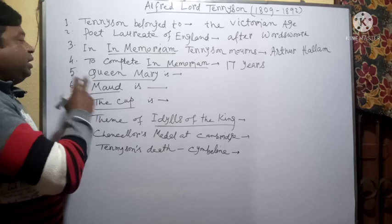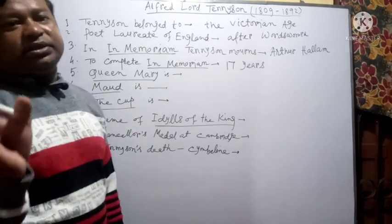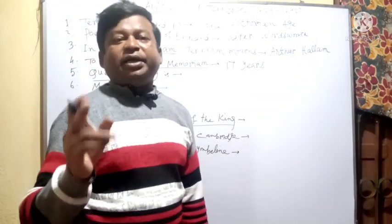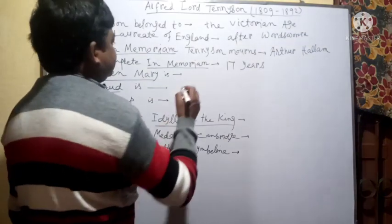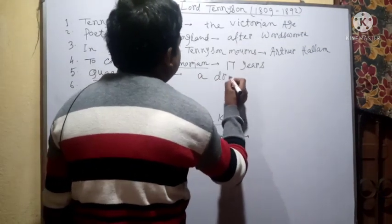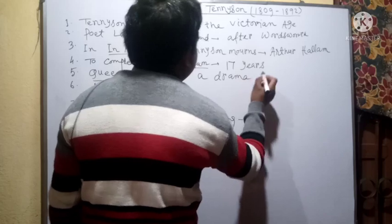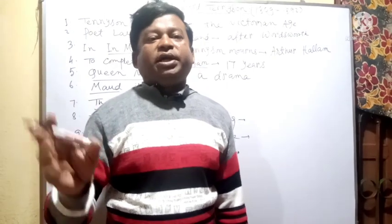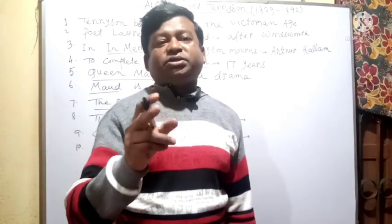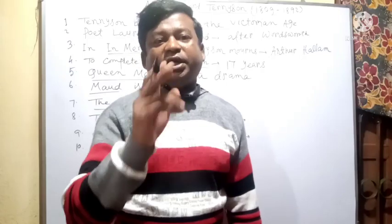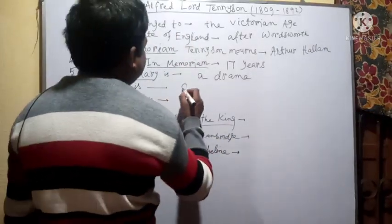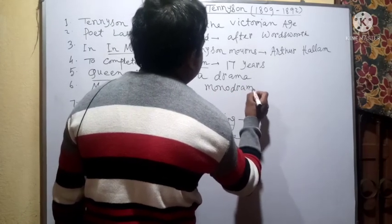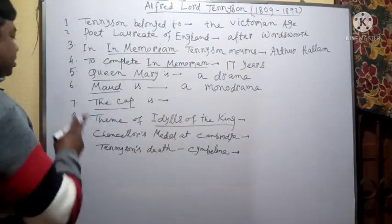Next question, question number 5: Tennyson's Queen Mary is — what? The answer is: Tennyson's Queen Mary is a drama. Question number 6: Tennyson's Maud is — what? The answer is: Tennyson's Maud is a monodrama.